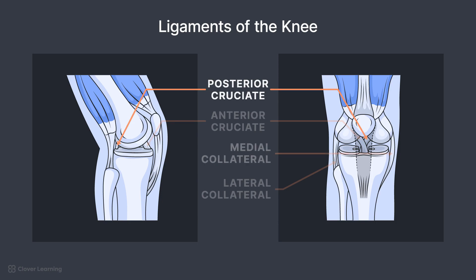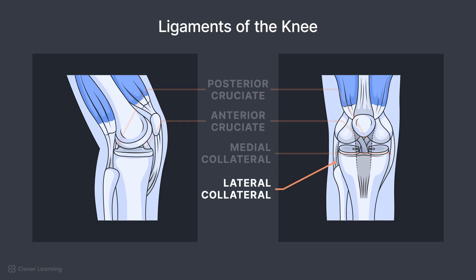The medial collateral, or MCL, runs along the medial or inner side of the knee and protects from forces pushing the knee inward. The lateral collateral, or LCL, runs along the lateral or outer side of the knee and protects from forces that push the knee outward.